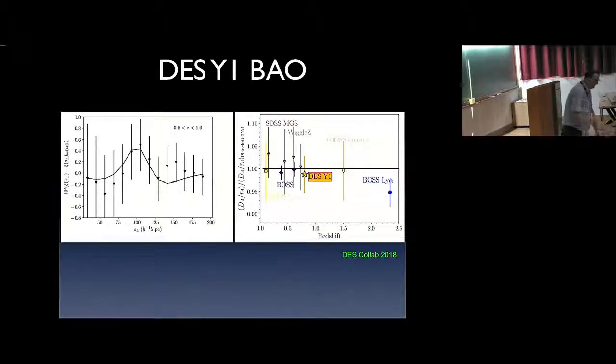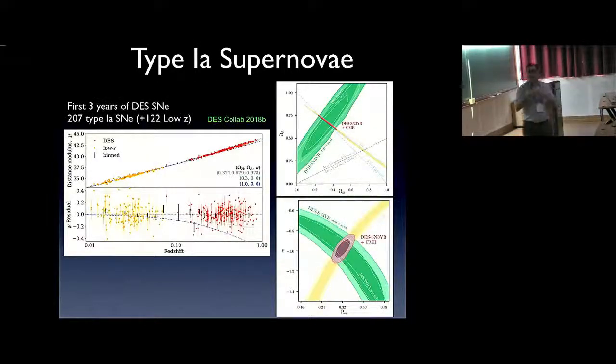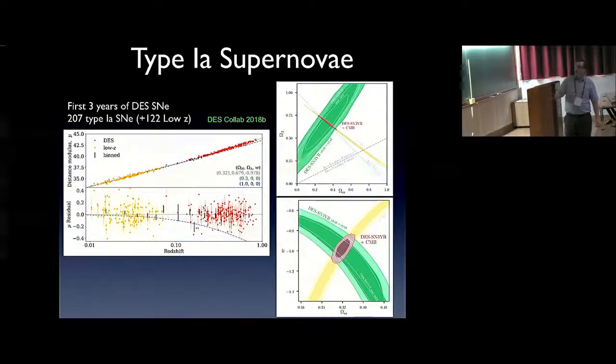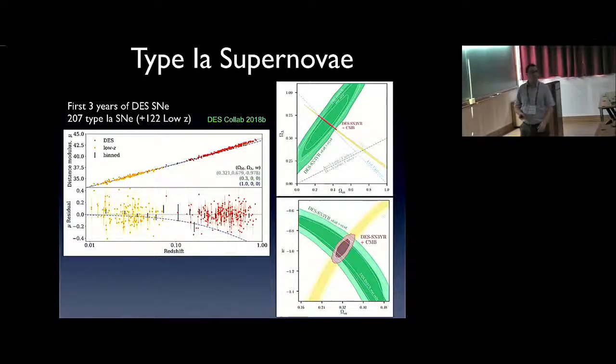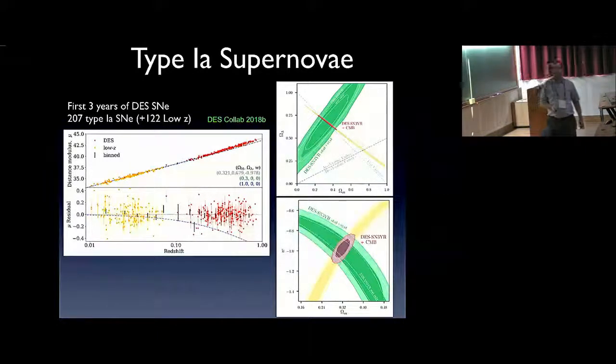Now we can also look at these supernova fields. These are fields which are observed repeatedly in a cadence which optimizes the measurement of the light curves of supernovae, and using, selecting the supernovae type 1A, we can get a Hubble diagram, which is a redshift versus distance diagram. Here, using the first three years of the supernovae data in DES, the team could obtain 207 type 1A supernovae, which are shown here in red at relatively high redshift.